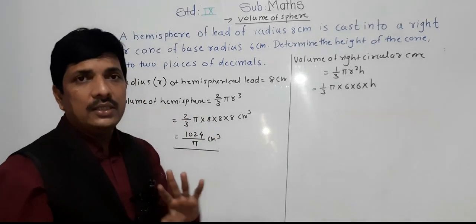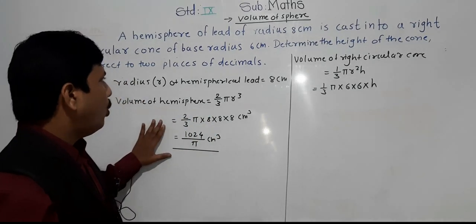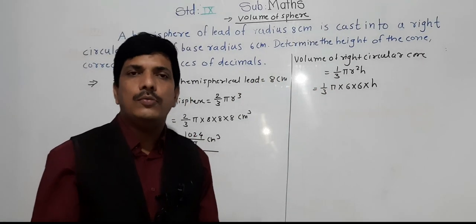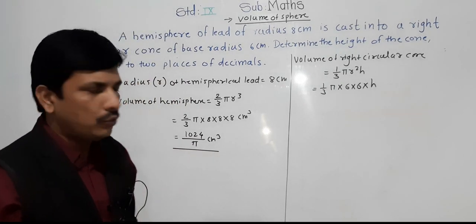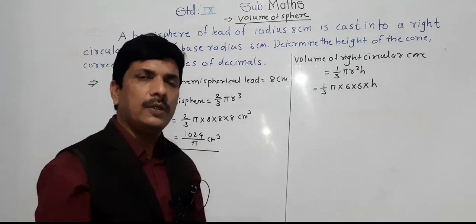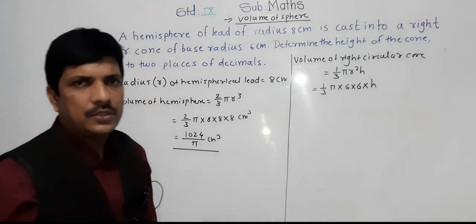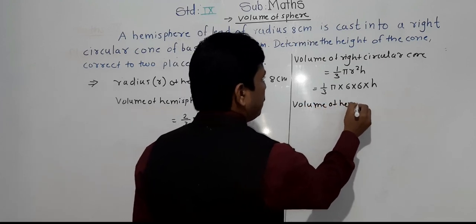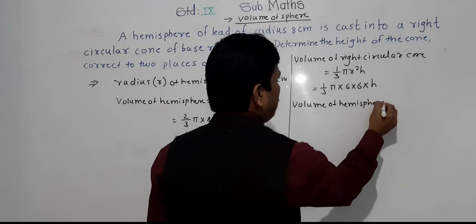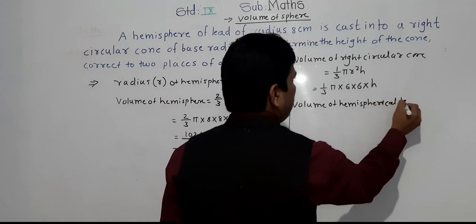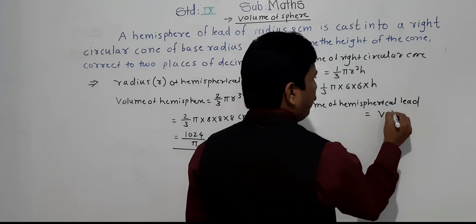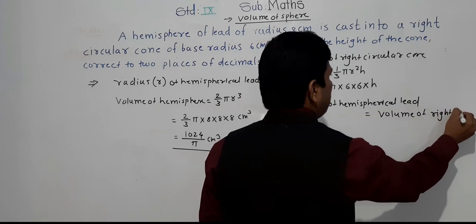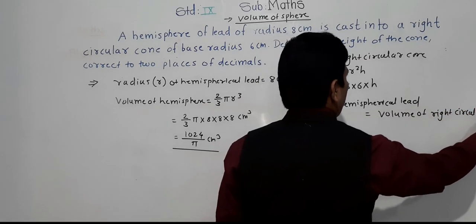One thing is clear here: the volume of the hemisphere of lead equals the volume of the right circular cone. Both the volumes are the same, so we can compare and equate them. Then automatically we will get the height H.